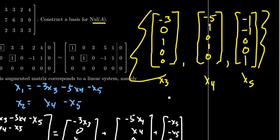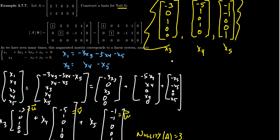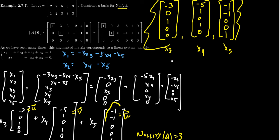Hopefully these vectors look familiar. The first one was negative 3, 0, 1, 0, 0 — same thing. The next one was negative 5, 1, 0, 1, 0 — same thing. And the last one is negative 1, negative 1, 0, 0, 1 — same thing. So we can actually extrapolate the basis of the null space directly from the RREF, and skip all the middle work with systems of equations and general solutions if we want to. If the more drawn-out process makes sense to you, that's fine, but this is a nice shortcut. In the next video, I'll do another example of the shortcut method for finding the null space of the matrix.